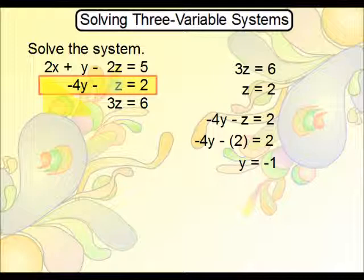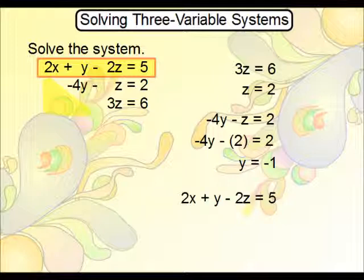Now once you've gotten that, then you take your solutions for z and for y, and you plug back into the first one. So you're kind of going in reverse here. So write that first one now. Plug in your answers for y and z. Then solve for x.